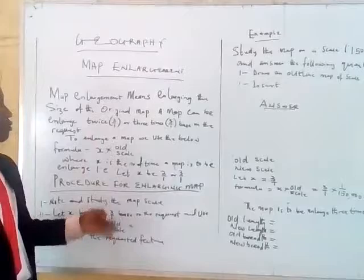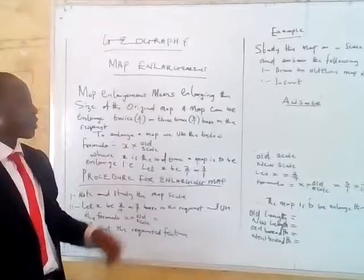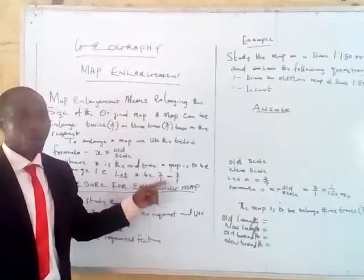So you use this formula, x times old scale, where x is the number of times the map is to be enlarged. That is, let x be 2/1 or 3/1. Procedure for map enlargement.